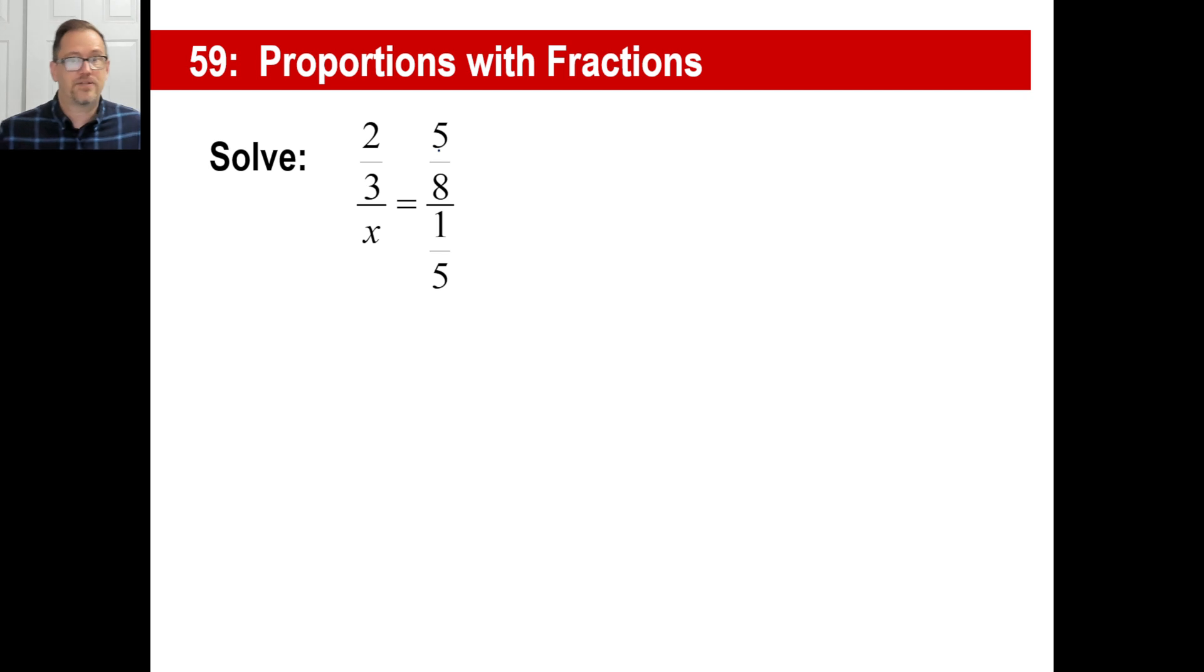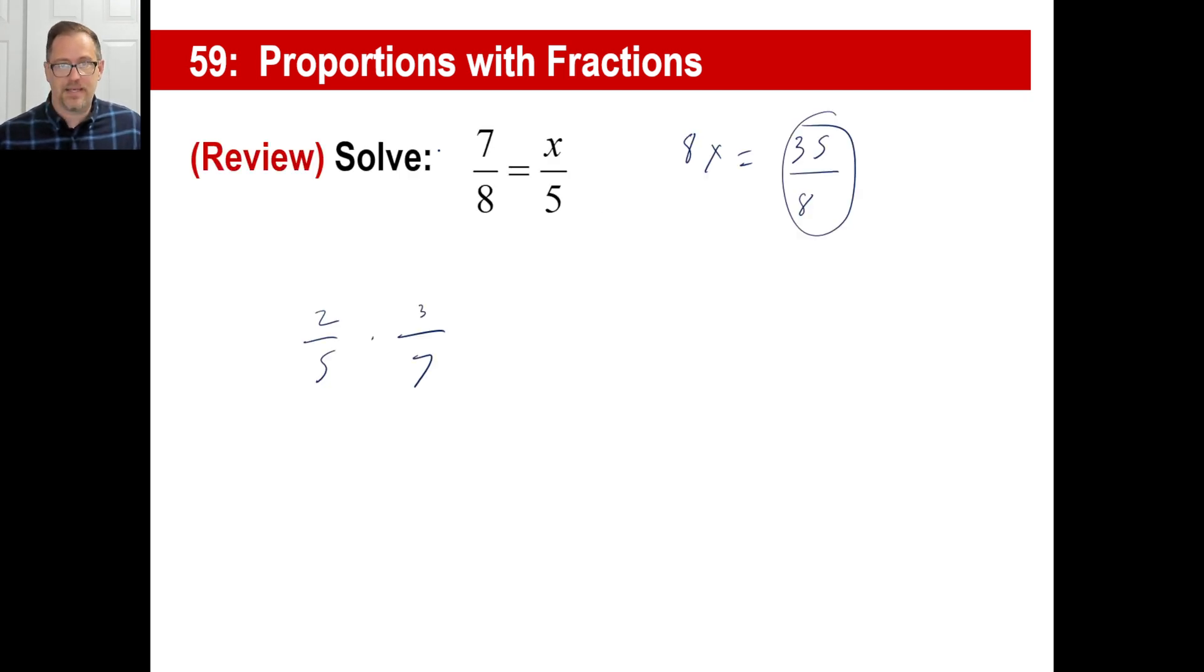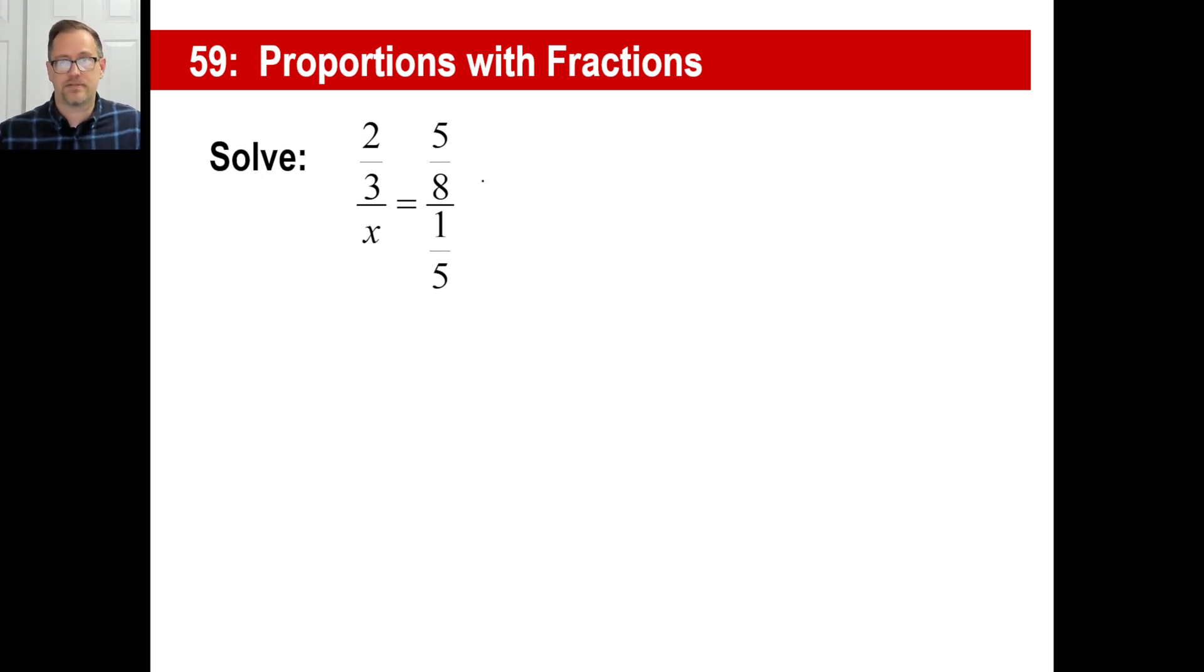Basically, this is exactly the same thing as this, except for instead of an integer, like a 7 and an 8 and a 5, you're going to have a fraction here, a fraction there, and a fraction here. But it doesn't matter. You do exactly the same thing you always did. There's no difference, except you're multiplying fractions, which you know how to do. So it's the same thing. You cross multiply.